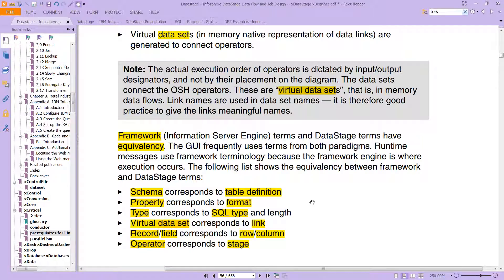And then you have a thing called properties, which we looked at from the ER system, the entity relationship system, and those correspond to what's called a format. Type corresponds to a SQL type and length, so if you have big int or varchar or whatever.